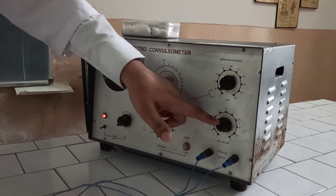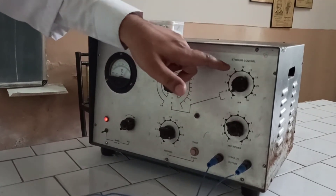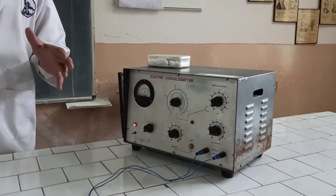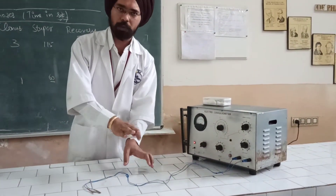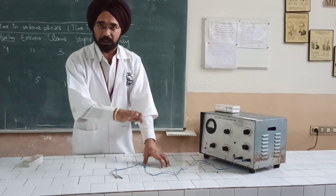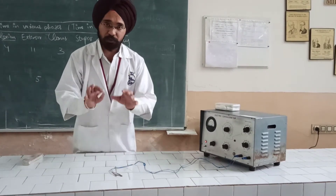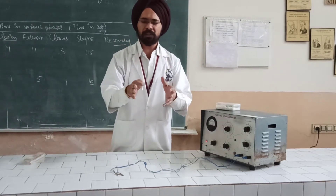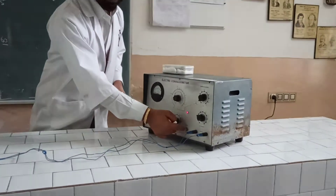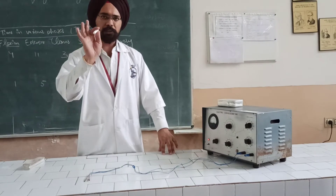We have already set one knob to 10 and the other knob to 15, so 15 multiplied by 10 gives 150 milliamperes of electric current which will be passed through the eyes of the rats held in a particular position. Before passing the electrical discharge, a little bit of saline is applied to the eyes of the rats. Then the 150 milliampere electrical discharge is sent through the electrodes to the eyes of the rats for a period of 2 seconds.